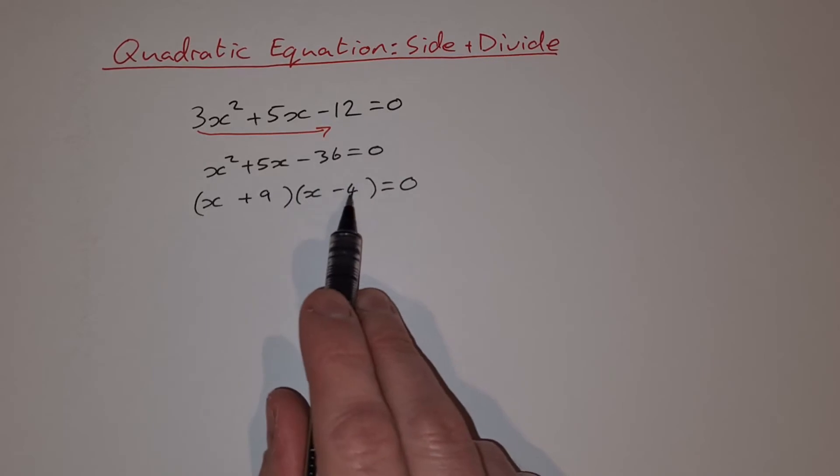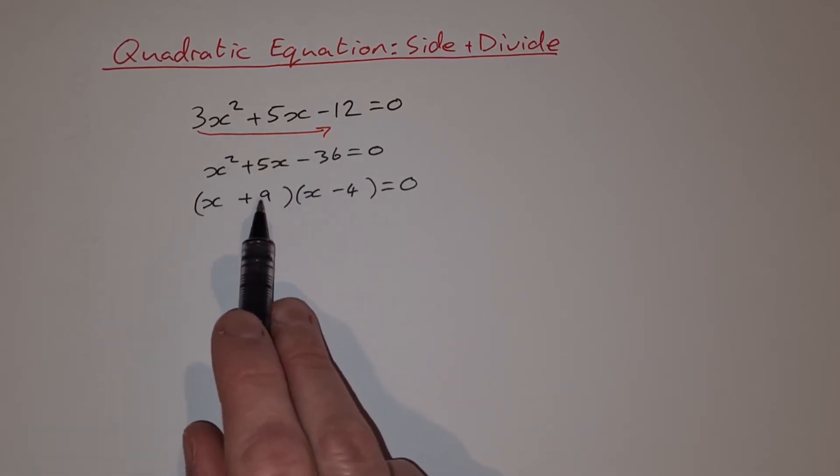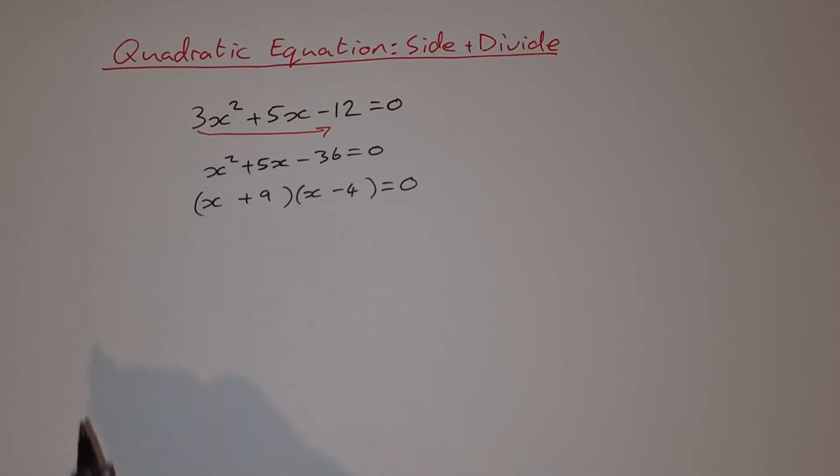So plus 9 by minus 4 gives you minus 36. And then if you add these plus 9 minus 4, you get 5. So that's the slide bit.